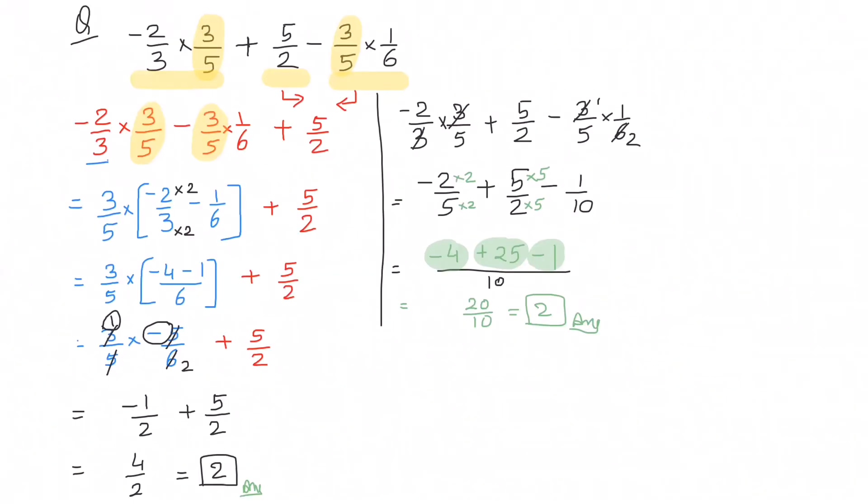So if it is asked using property, you have to do this method. And if it is only asked simplify, then use the right-hand side method.